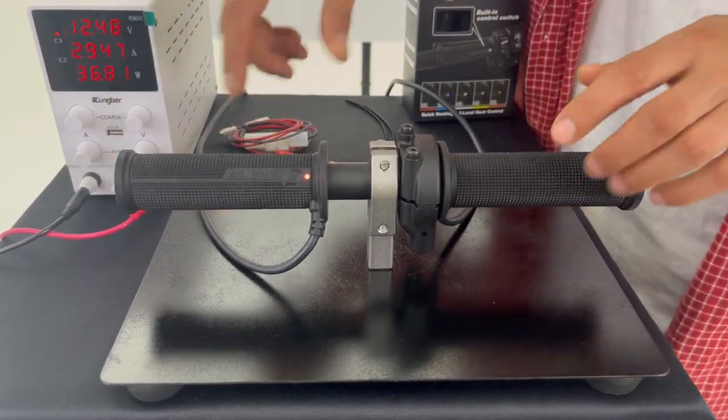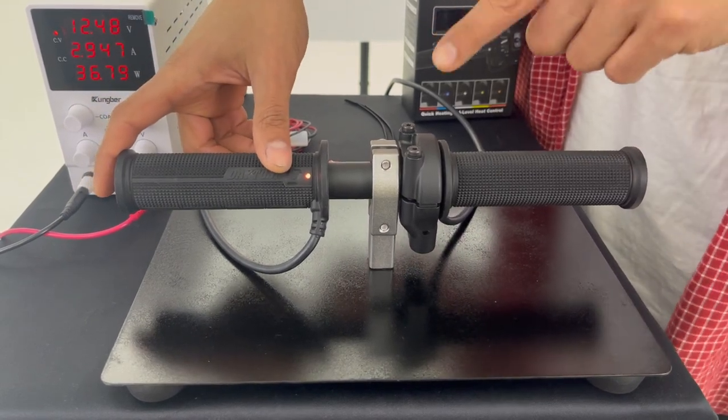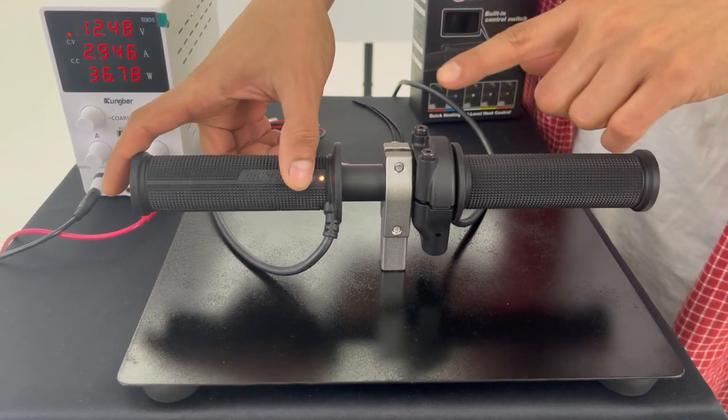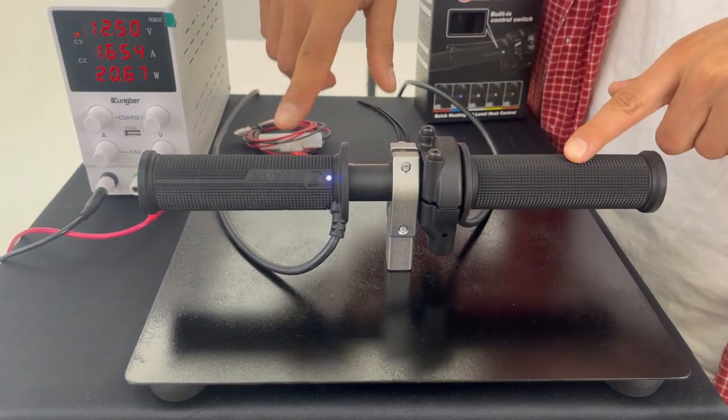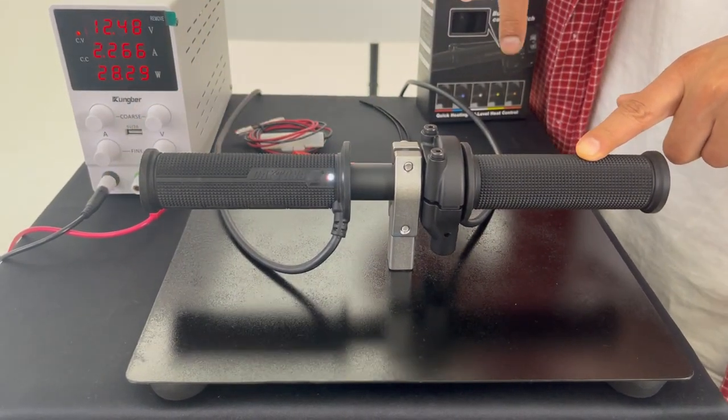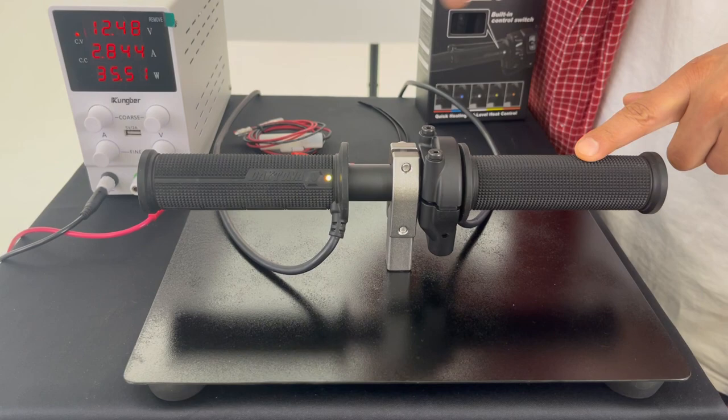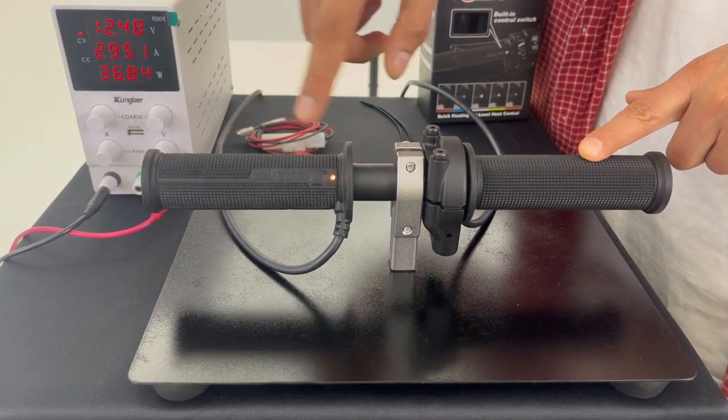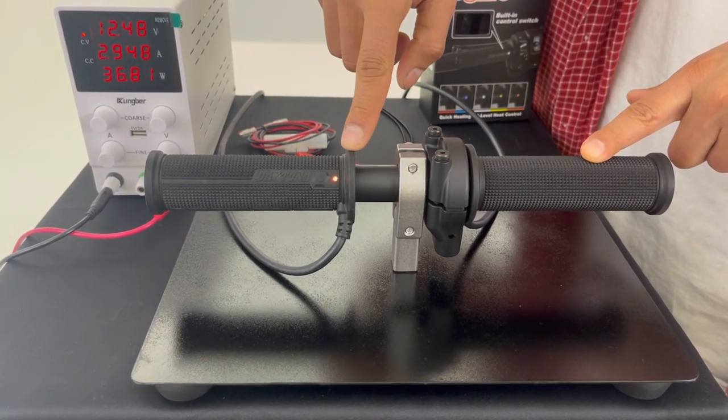And these grips have four different levels of heat control. Right now it's blue, which is the lowest level. Then we have white, yellow, and the last level is orange, which is the hottest one.